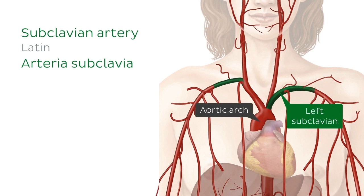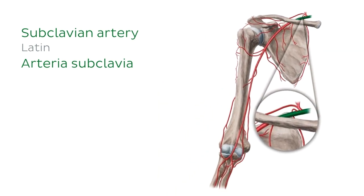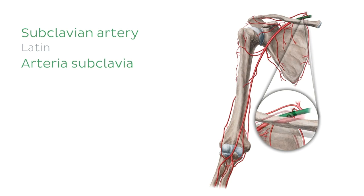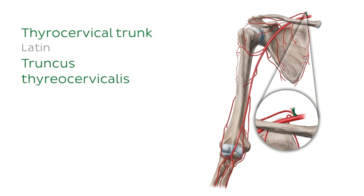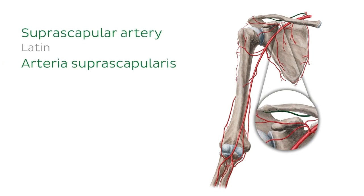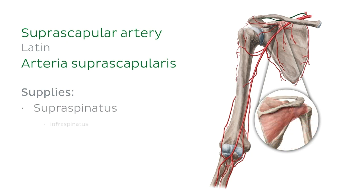So let's go back to our previous image. From its origin, the subclavian artery travels laterally, passing between the anterior and middle scalene muscles. Along its course, the subclavian artery gives off various branches, but today we will only focus on the branches that supply the shoulder and the arm. The thyrocervical trunk arises from the subclavian artery, and the reason we're mentioning it is because it gives rise to the suprascapular artery. The suprascapular artery supplies the supraspinatus and infraspinatus, which are muscles of the rotator cuff.